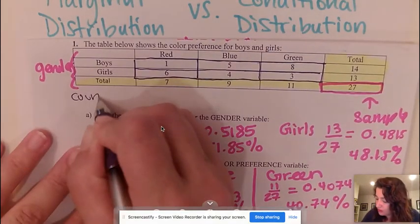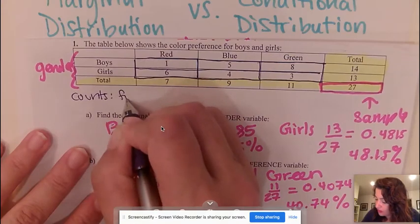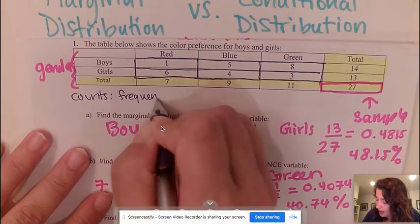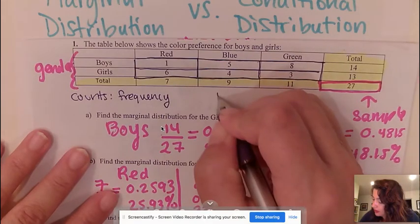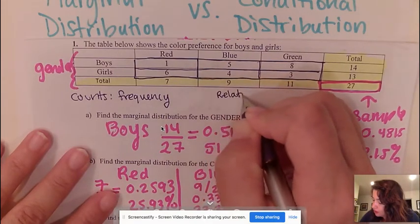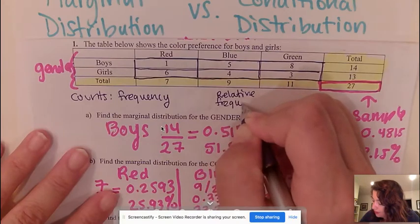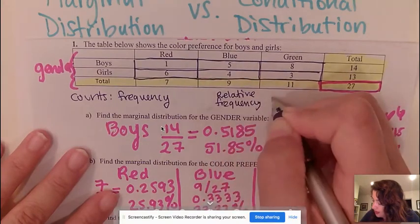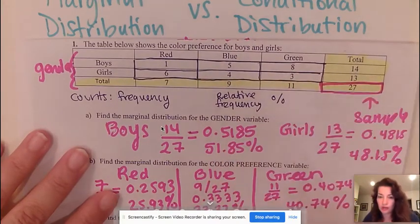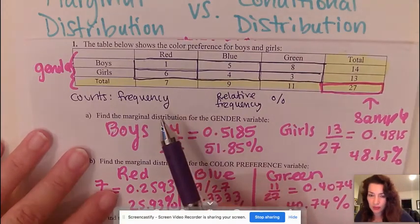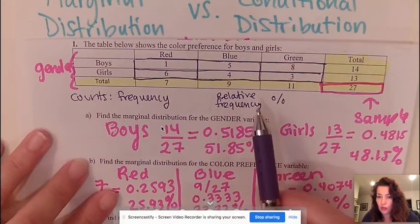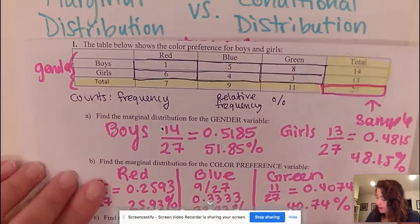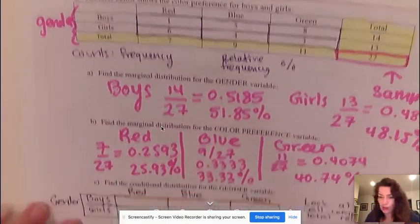Counts are also known as frequency. When I turn a count to a percentage that is called a relative frequency. So relative frequency I have a percentage and frequency I have a count. You can be given a table with counts or you can be given a table with relative frequency. Let's go ahead and take a look how we would find conditional distribution for gender.